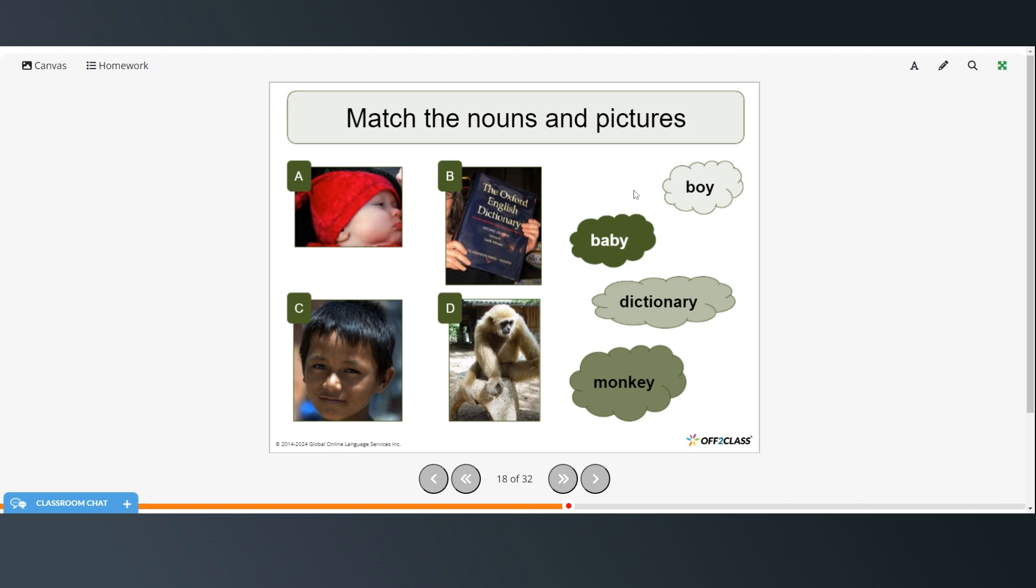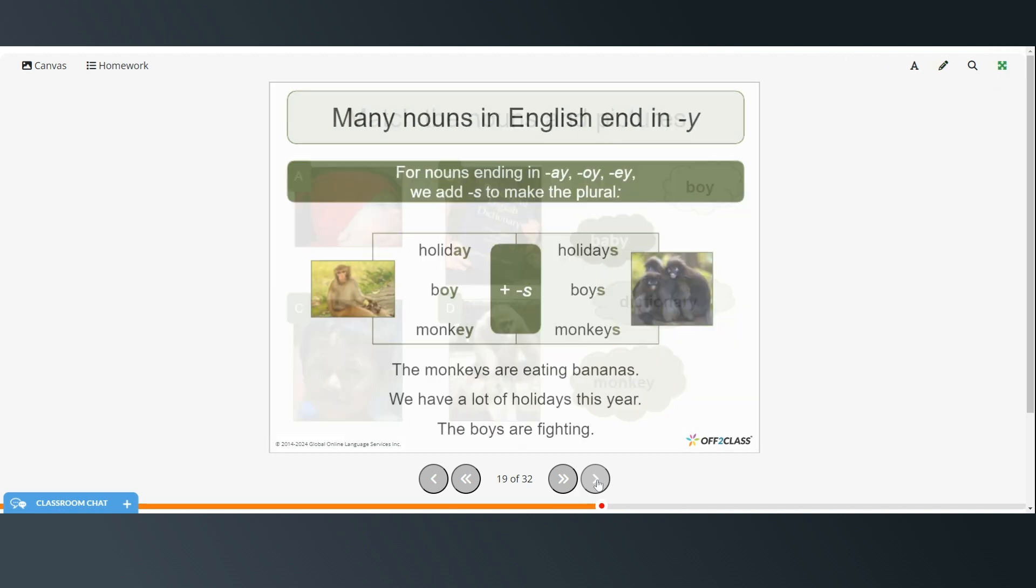Alright, so now we're going to match the nouns with the picture. So picture A would be a baby. Picture B would be a dictionary. Picture C would be a boy. And picture D is a monkey. Alright, now we're going to talk about nouns that end in Y. So if a noun ends in A-Y, O-Y, or E-Y, we just add an S to make it plural. So holiday becomes holidays. Boy is boys. And monkey, monkeys. So the monkeys are eating bananas. We have a lot of holidays this year. And the boys are fighting.